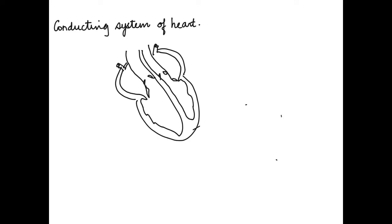It helps to provide an automatic rhythmic beat to the heart. These tissues are specialized nodes that are present as well as fibers along the interventricular septum and the ventricular wall.